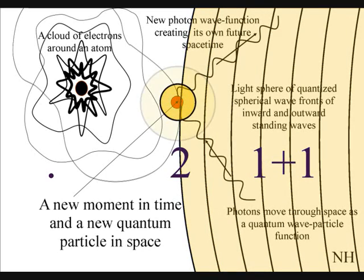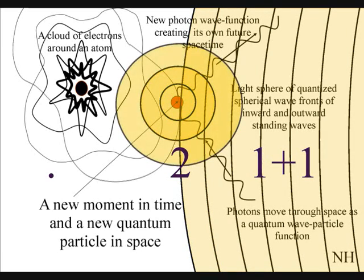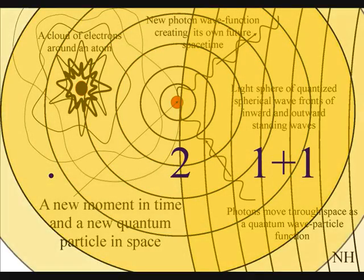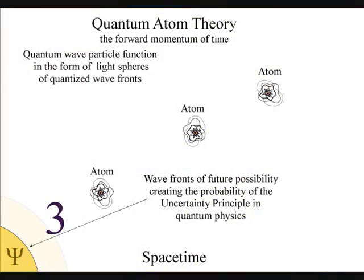Each new vector will have an energy level based on the two previous vectors. This will form the Fibonacci curves and spirals that can be seen in all life, but is most visible in plant life.